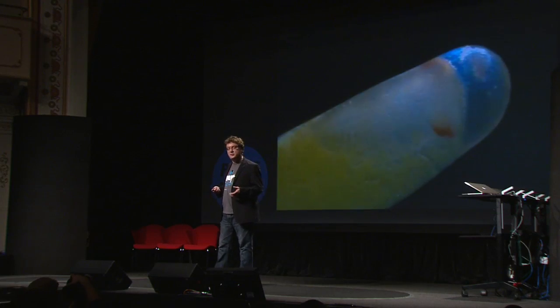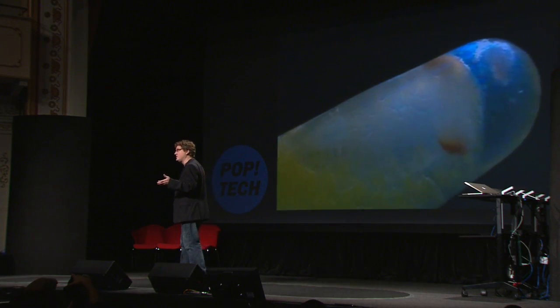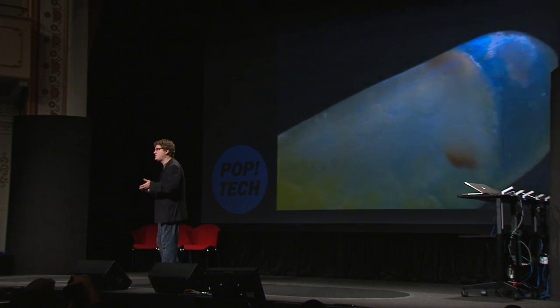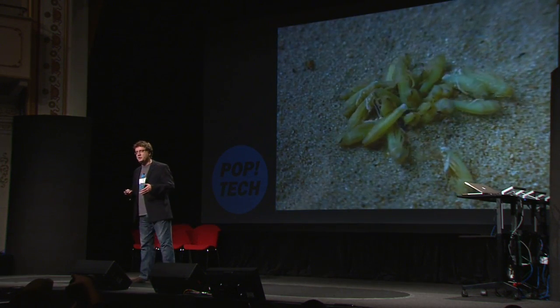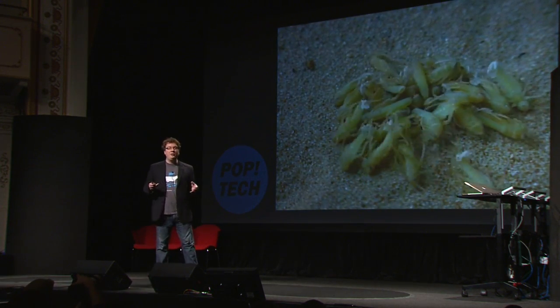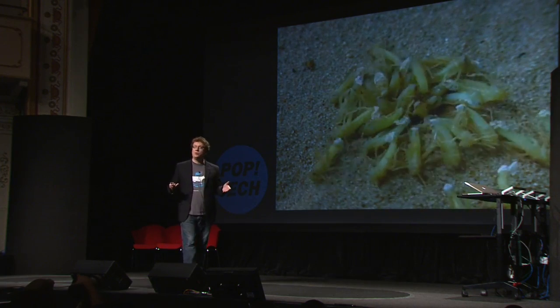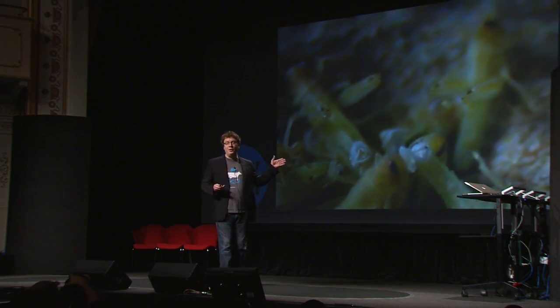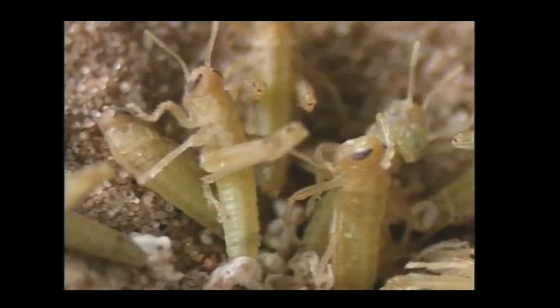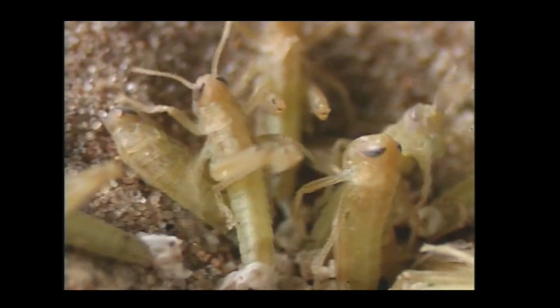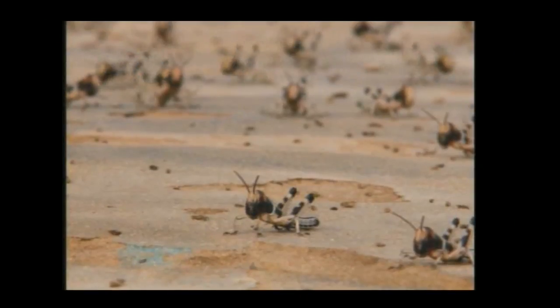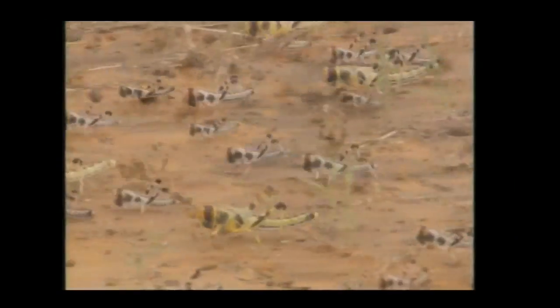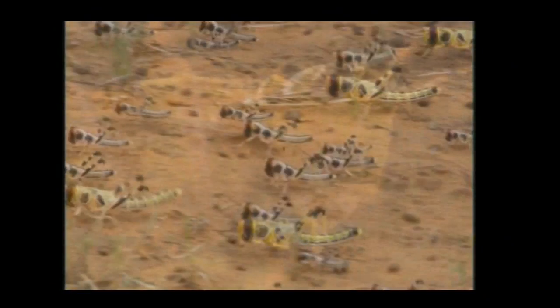What most people don't realize is that locusts don't have wings until the last stage of their lives. For the first two months of their life, they're wingless nymphs called hoppers. In my lab, we've bred these insects. They'll hatch out and dry themselves under heat lamps — their representation of the sun — and they'll start marching together.